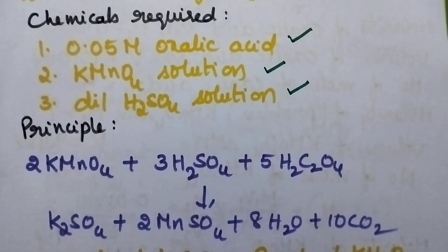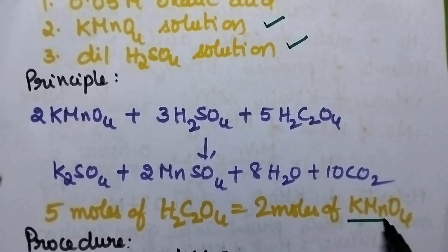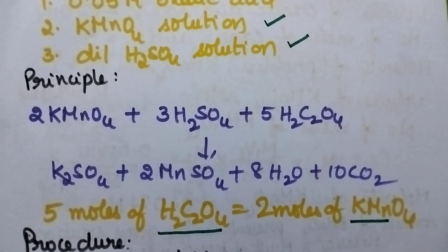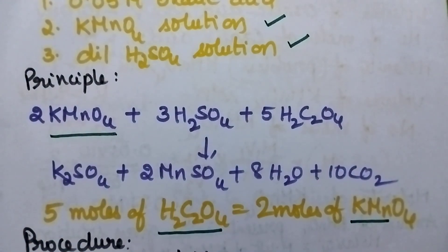Coming to the principle here, 2 moles of potassium permanganate react with 5 moles of oxalic acid and remember that permanganate is the self indicator.